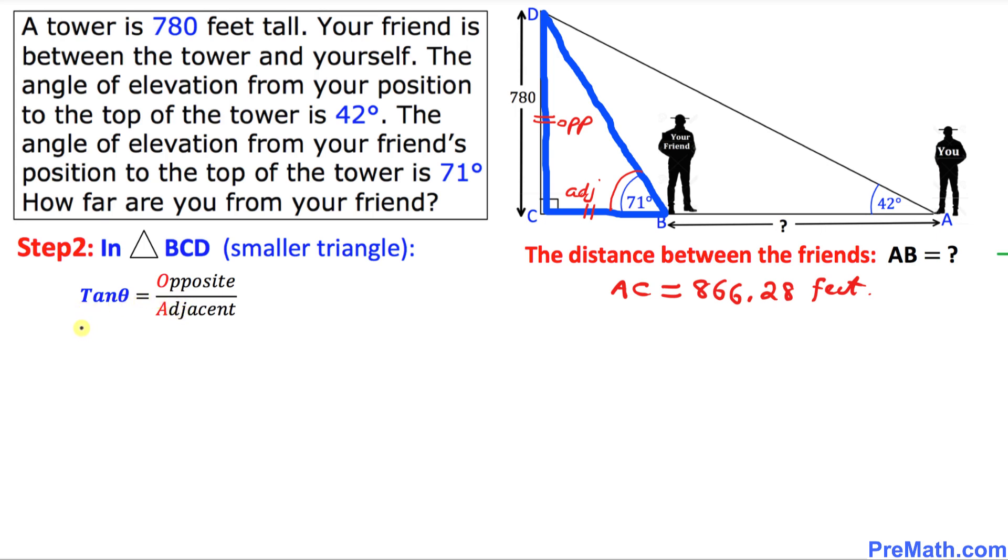So let's go ahead and fill in the blanks. Tangent of, we know that the angle this time is 71 degrees, and we know opposite side is 780 divided by adjacent is unknown. So I'm going to just put down BC.